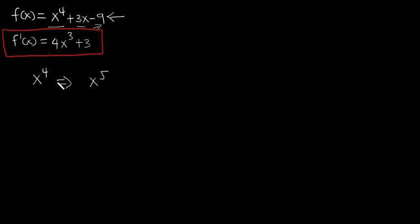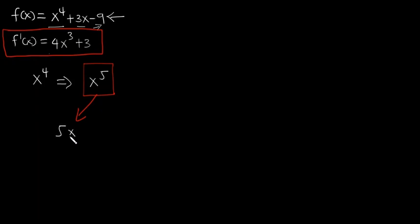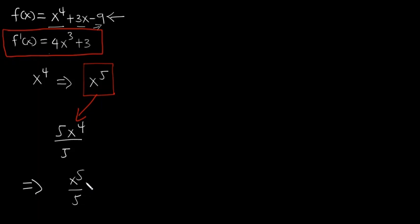Since in differentiation we reduce the power by one, you might think we differentiated x to the power 5 to get x to the power 4. But don't forget that in differentiation we multiply the whole term by the exponent before reducing it. If we differentiate x to the power 5 we get 5x to the power 4, not x to the power 4. So we need to divide the expression by 5 to get rid of that 5.